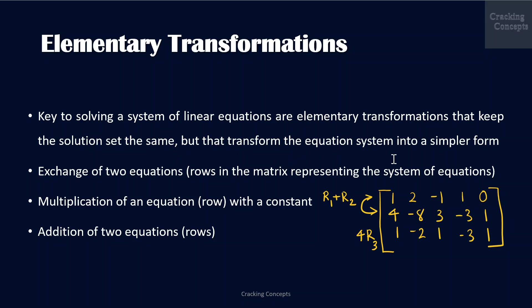This can be done in three ways: either by the exchange of two equations or rows in the matrix representing the system of equations, or by the multiplication of an equation or a row with a constant, or by the addition of two equations or rows.